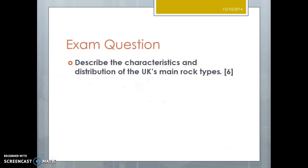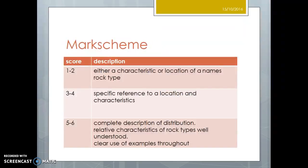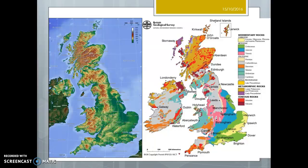So describe the characteristics and distribution of the UK's main rock types, and here's a mark scheme. If you can come up with a characteristic or a location with some details, you might get one to two. Make one specific reference to a location linked to a rock and characteristic, we're in three or four. And to get up onto five or six, we'll have a complete description showing that you have really understood different rock types and that you can use examples.